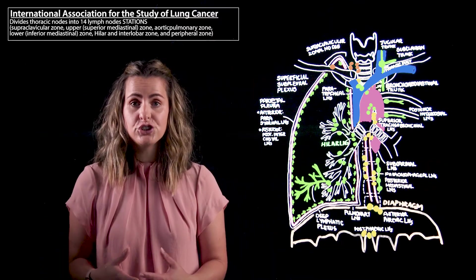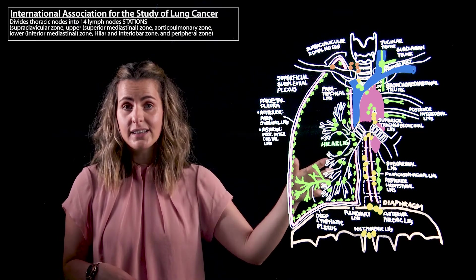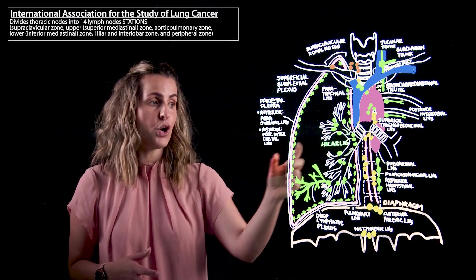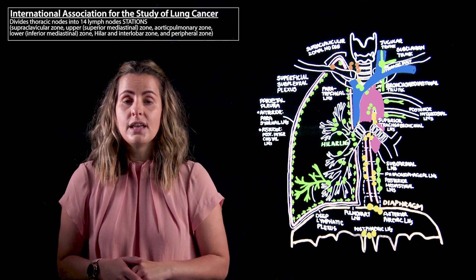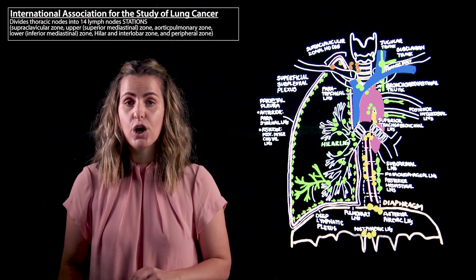Under this classification our N1 nodes are going to be our bronchopulmonary or our hilar lymph nodes as well as the pulmonary lymph nodes. This is also going to include that superficial and deep plexus of the lungs.